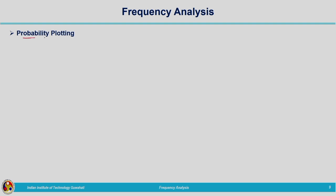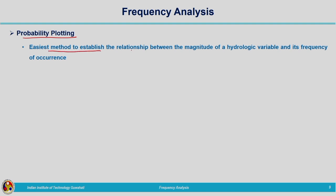The concept of return period and exceedance probability is now clear. Return period and exceedance probability are very important in frequency analysis. The probability of occurrence of an event at least once in n years can be computed using exceedance probability or return period, since these two are inverses of each other.